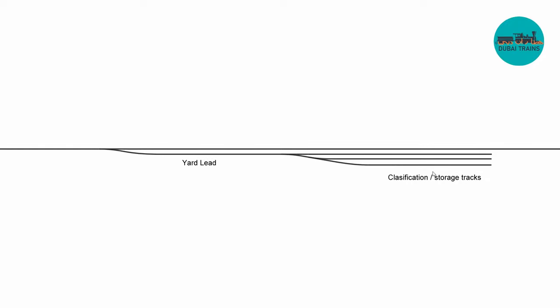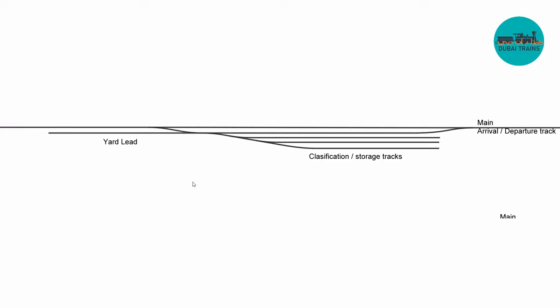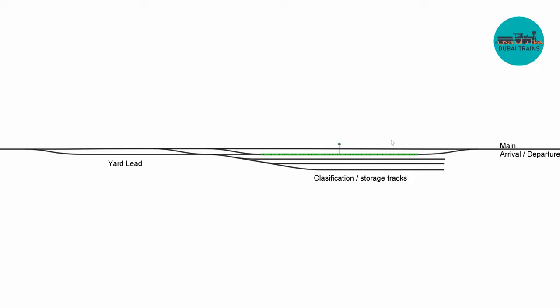Once you have a yard lead and classification tracks, you'll want an arrival and departure track. The train comes in from the west, takes the turnouts, and goes to the arrival and departure track. The big idea is that it can pick up and spot cars without fouling the main line, since these operations take quite a lot of time. Big yards can have several arrival and departure tracks — even separate ones for eastbound and westbound destinations.